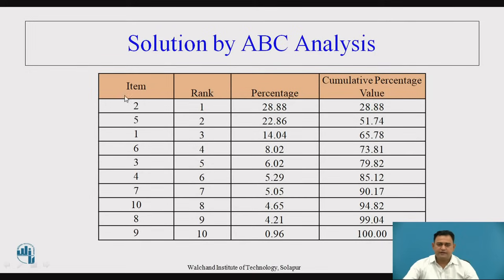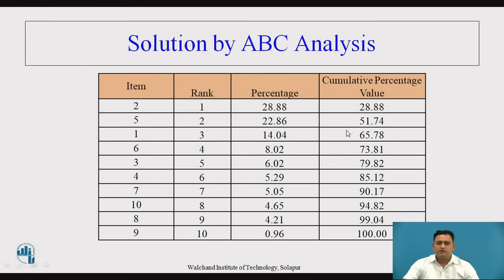Now the items' positions have changed. Item number 2 is costing the highest, so it has been ranked first. Item number 5, at 22.86%, has been ranked second. We have sequenced all items from highest to lowest percentage. Then we carry the cumulative percentage values: the first remains 28.88, the second becomes 28.88 plus 22.86 equals 51.74, and so on until the final cumulative summation reaches 100%.